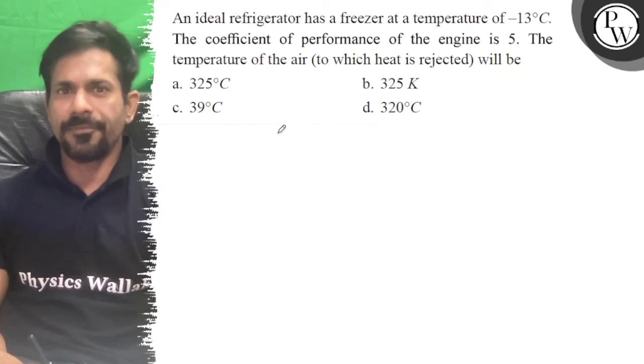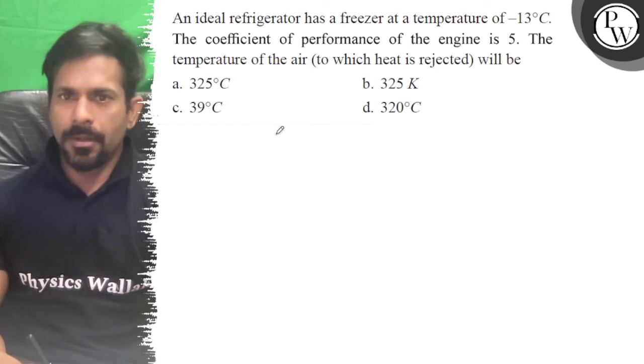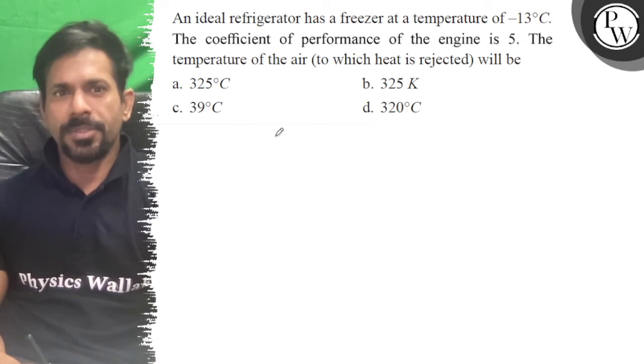Let's see the question. An ideal refrigerator has a freezer at a temperature of -13°C. The coefficient of performance of the engine is 5. Then temperature of the air...